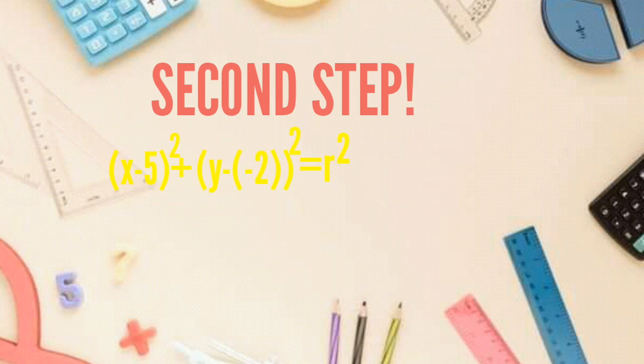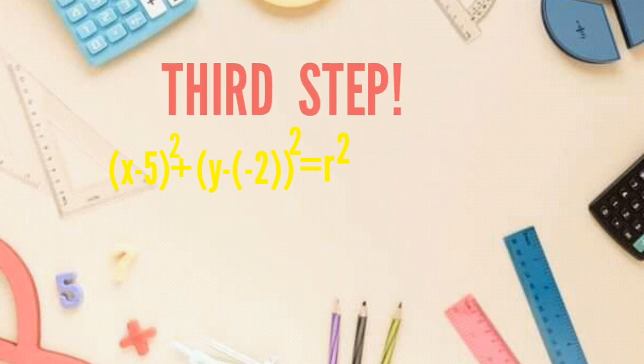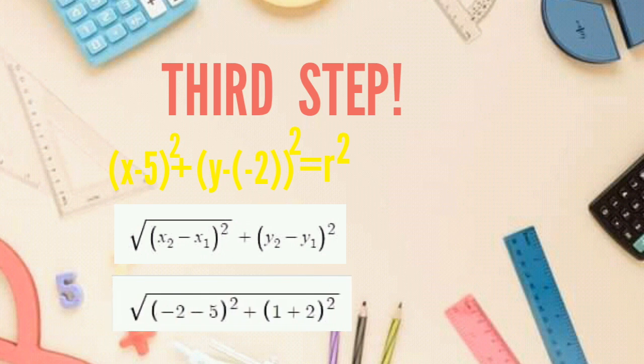Now substitute to 5 and -2. And then proceed by solving the distance by using this formula: square root of (x₂ - x₁)² plus (y₂ - y₁)² equals square root of (-2 - 5)² plus (1 + 2)² equals square root of 58.